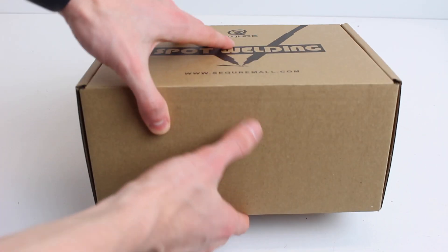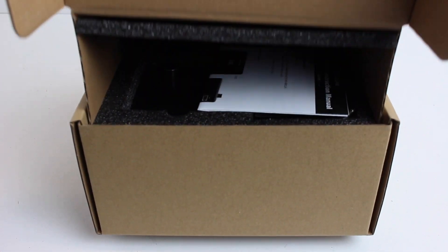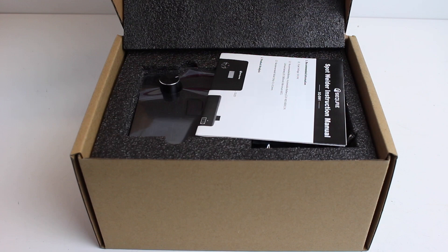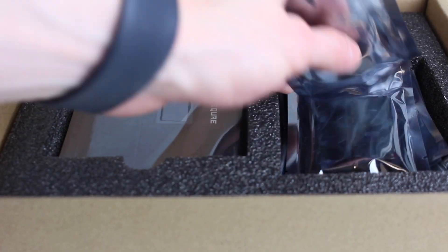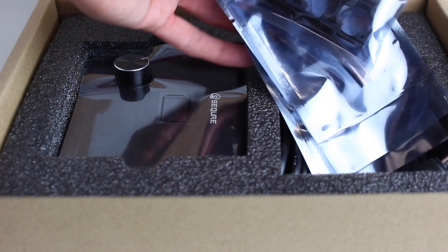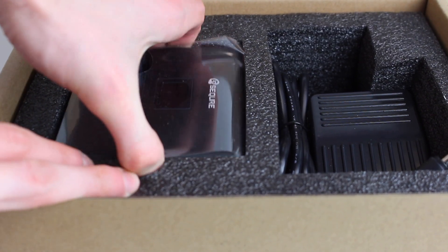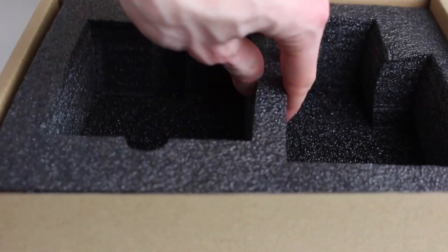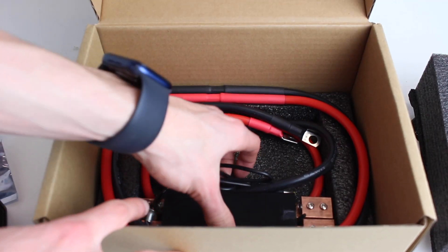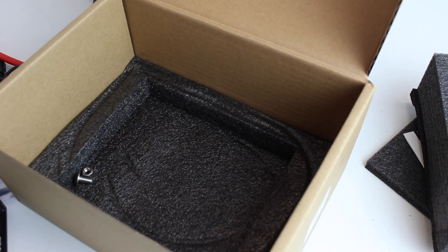What is up everyone, welcome back to a brand new video. In today's video we are going to be unboxing and reviewing the Secure SQ SW1 Mini Intelligent DIY Spot Welder. This is a spot welder that's made for making your own custom DIY electric skateboard or personal electric vehicle battery packs. Essentially, if you don't know what a spot welder is, you use it to weld the cells together in your pack so that you can arrange them into a larger battery than an individual cell.